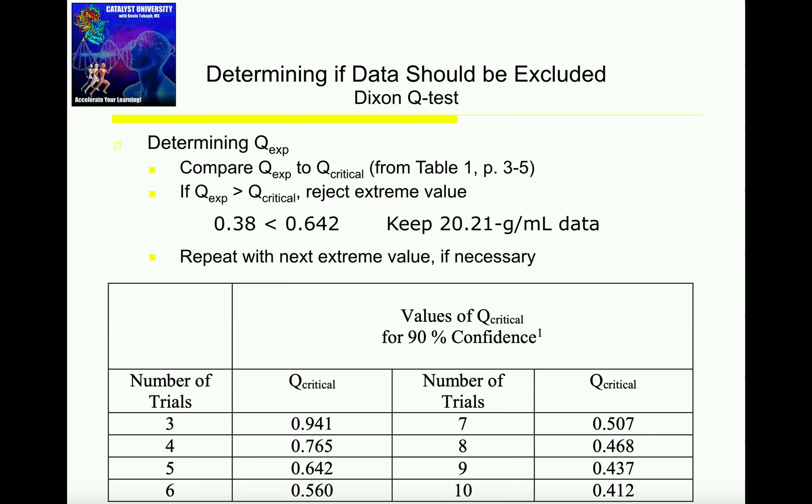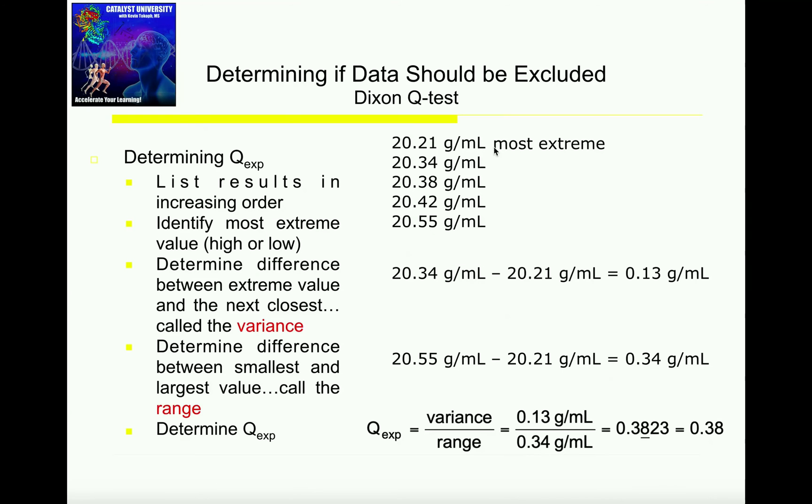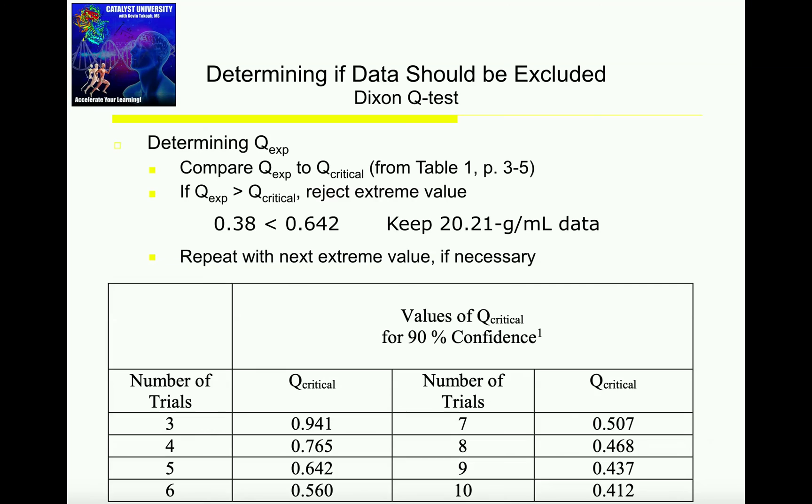Now I need to compare this Q experimental to the Q critical. But notice now I only have five data points because I was able to throw out the 19.00. So now when I look this up in the table, I'm only going to be looking at five trials or five measurements. My new Q critical is 0.642. The only way we could reject the extreme value would be if Q experimental was greater than Q critical. But our Q experimental is not greater than Q critical. It's actually less than it. So we cannot reject that extreme value or we cannot throw it out. We actually have to keep it.